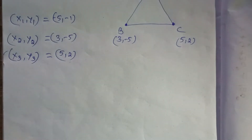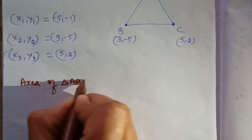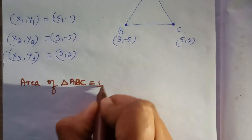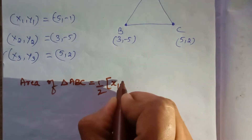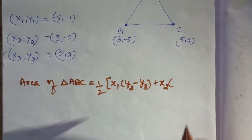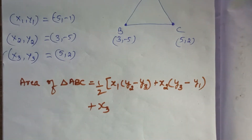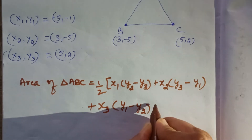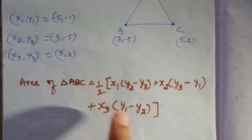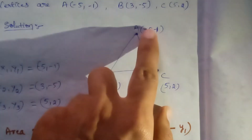We have the formula for solving the area of a triangle using vertices. Please note the formula. Area of triangle ABC is equal to 1/2 times the absolute value of: x1(y2 − y3) + x2(y3 − y1) + x3(y1 − y2). This is the formula for the area of triangle ABC when the vertices are given.